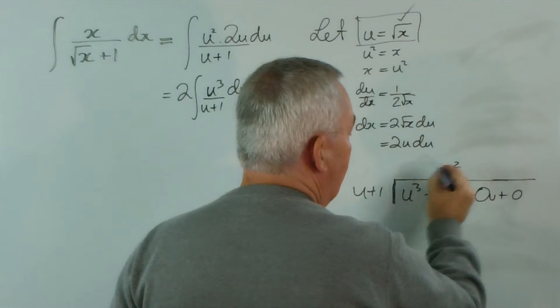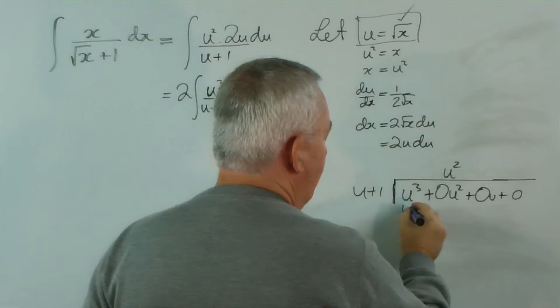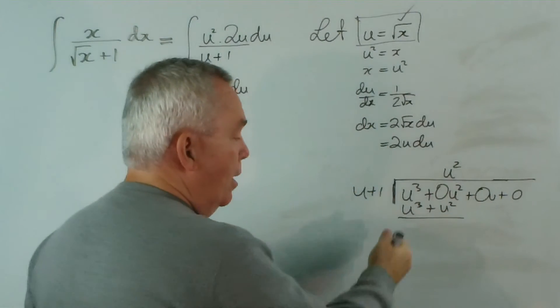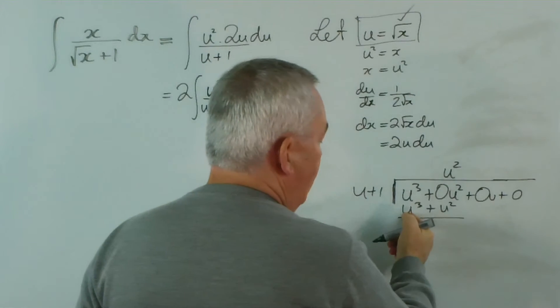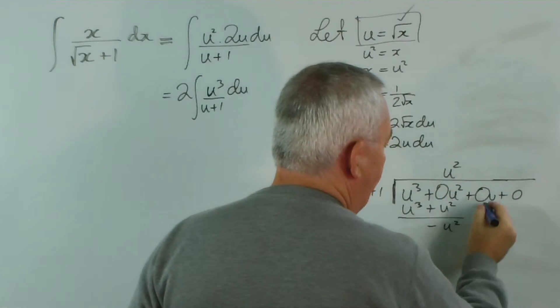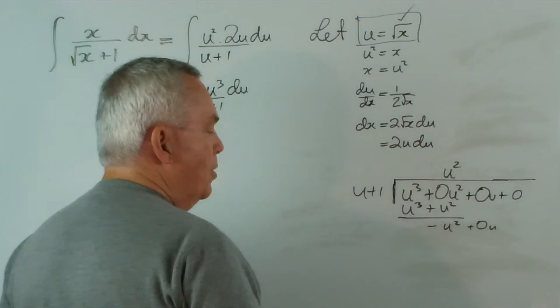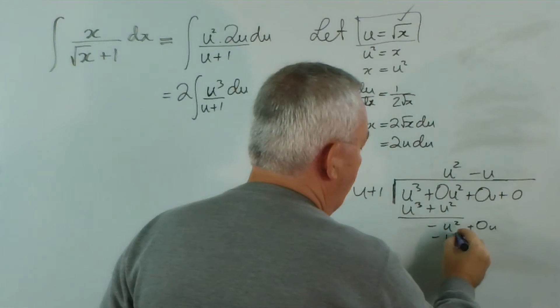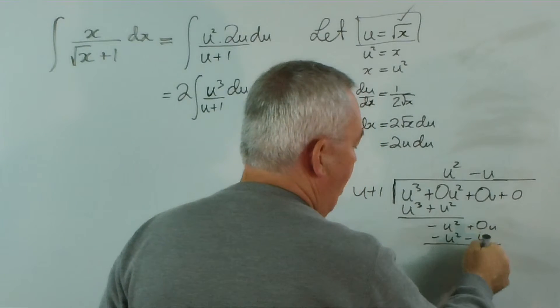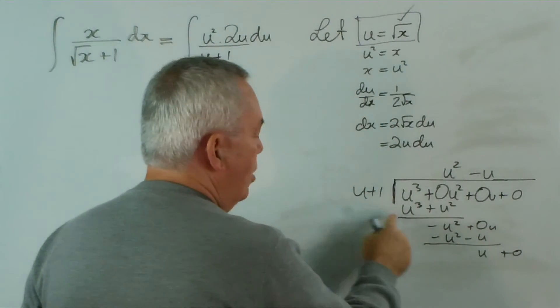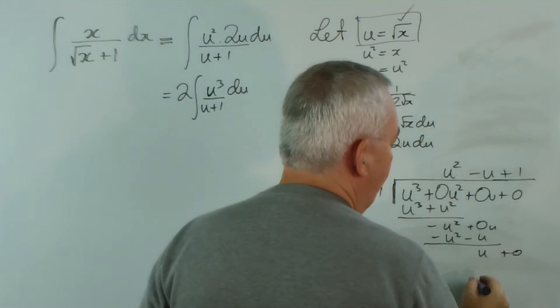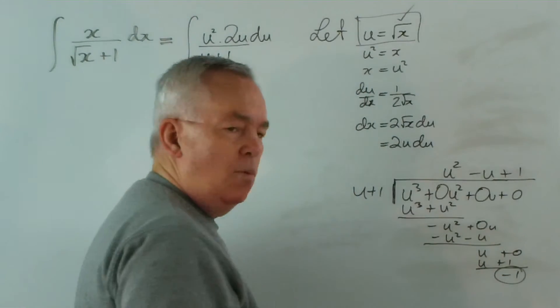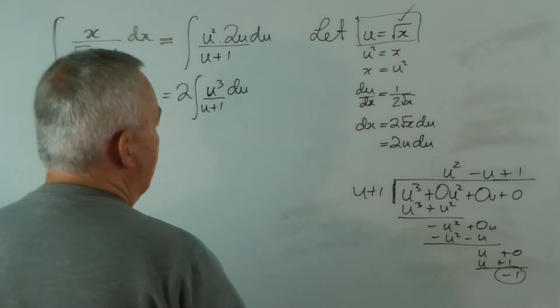How many u's go into u cubed? u squared do. Put it in the u squared column. u squared times this is u cubed plus u squared. Subtract. Those disappear. Zero minus that gives us minus u squared. Bring down no u's. u into minus u squared or negative u squared is that, and we get this. Subtracting again, we get u. Bring down the zero. u into u goes once. 1 times u plus 1 is u plus 1, and subtracting, we have a remainder of negative 1. So what does this give us?